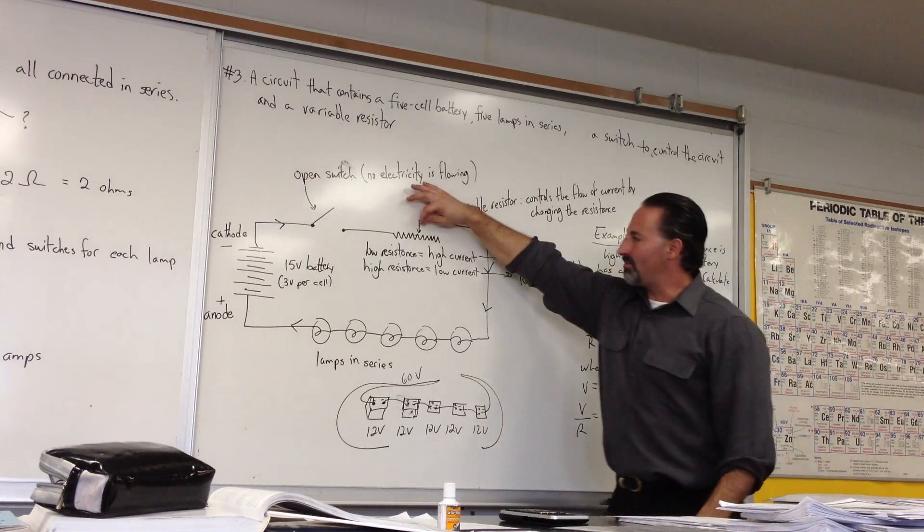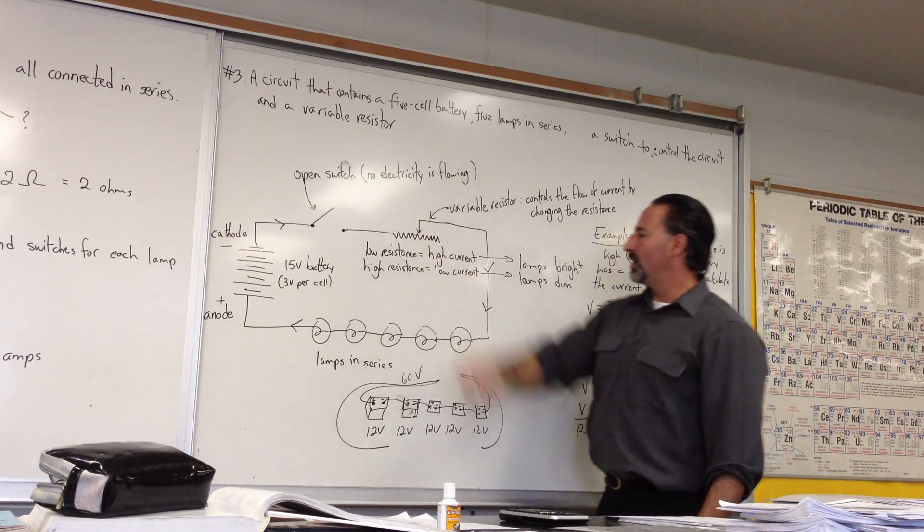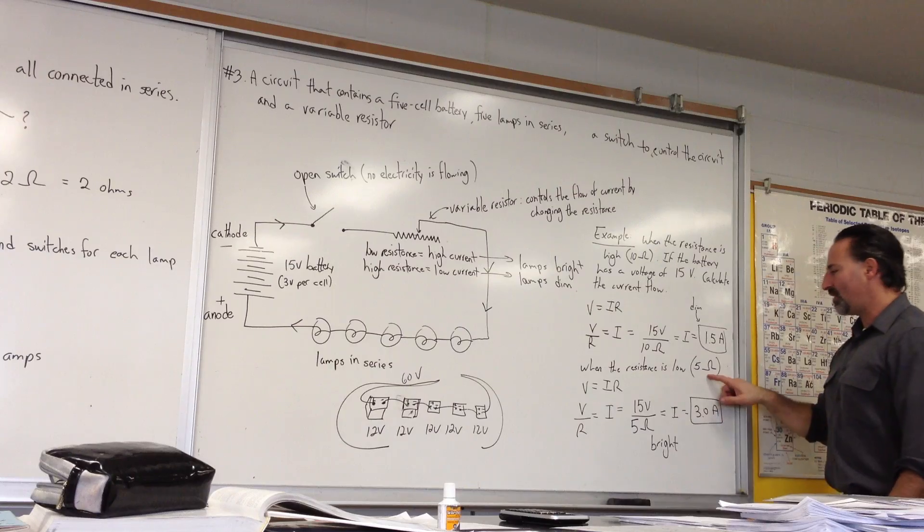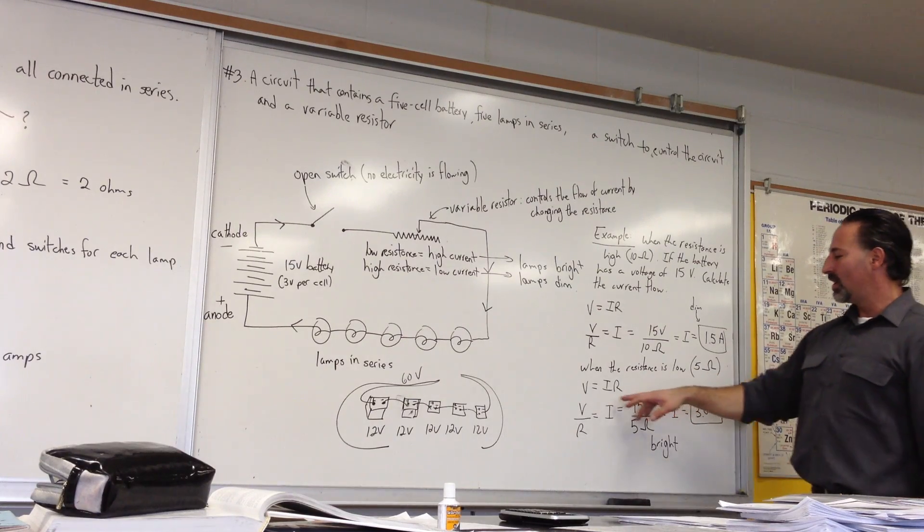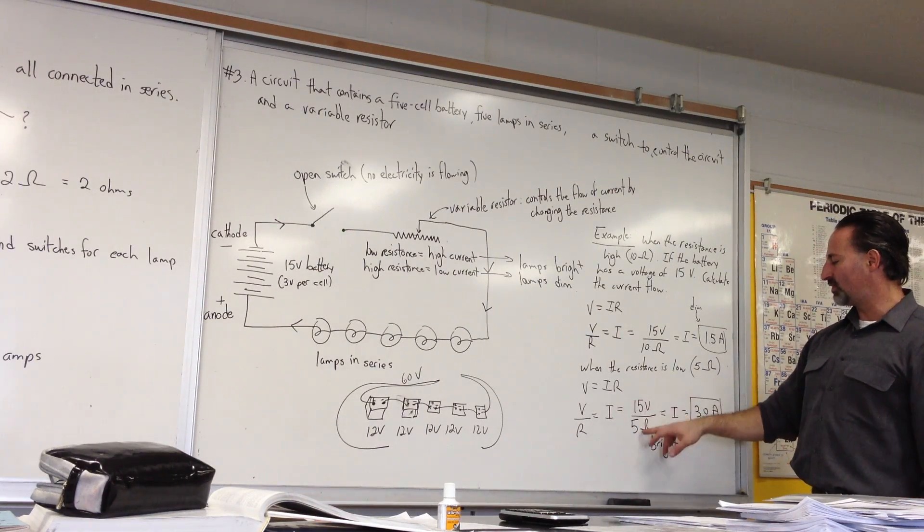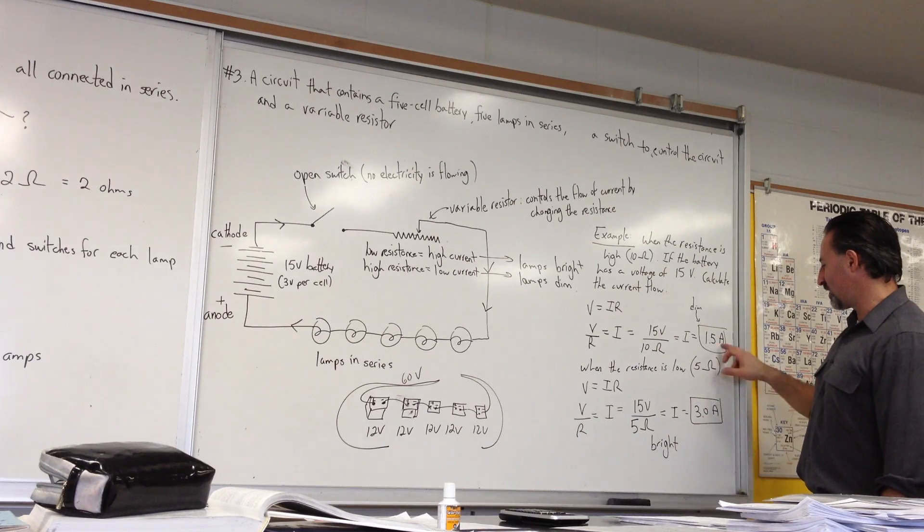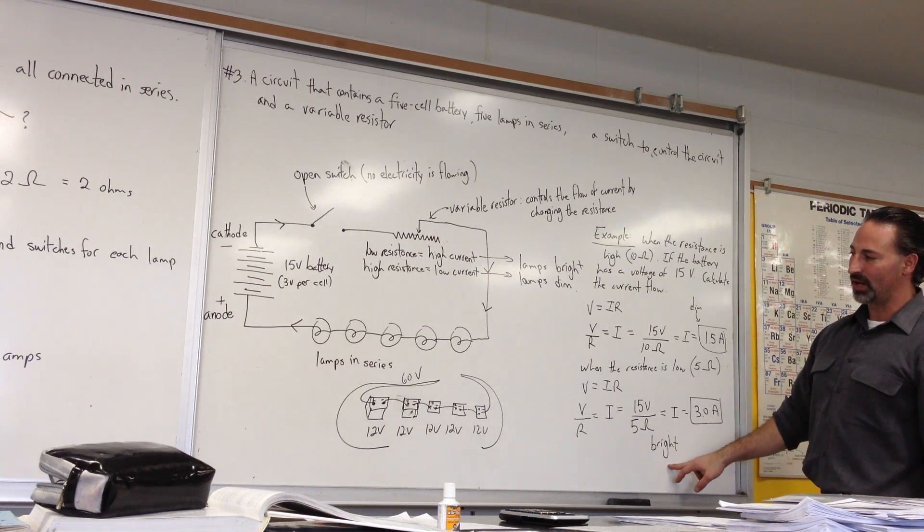If then we were to take that variable resistor and move it this way, so that we have only 5 ohms of resistance, now the current flow will be higher. 15 divided by 5 will give us 3 amps of current, and it doubles the amount of current flowing through, and the lamps will burn brightly.